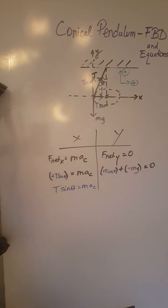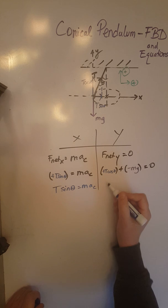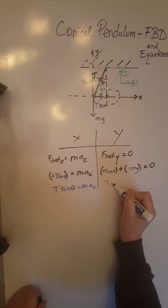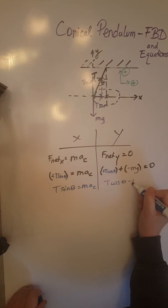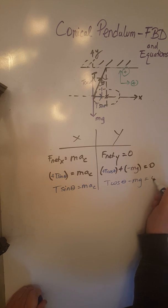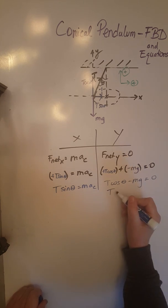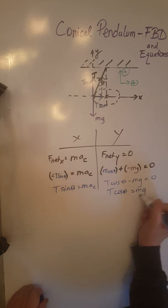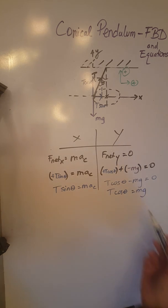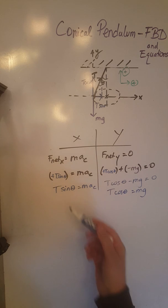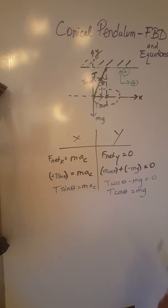Once we simplify this, we are going to end up with the equation T cosine theta minus mg equals zero, or we can rearrange this to have T cosine theta equals mg. These are the equations that you would need to use for any kind of problem that involves a conical pendulum, whether they ask you for the angle theta or the tension or the acceleration or anything else.